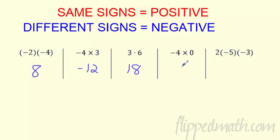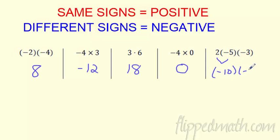What's anything times 0? If you times it by 0, it's always 0. Can you do 2 or 3 or 4 factors? Yeah, just go in order from left to right. So if I go 2 times negative 5, I get negative 10. Bring down the negative 3 — a negative times a negative gets me back to a positive. This will be positive 30. Just follow your rules and you're good to go.